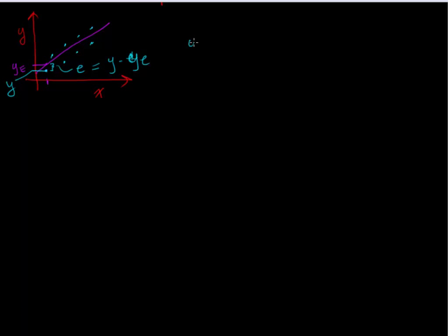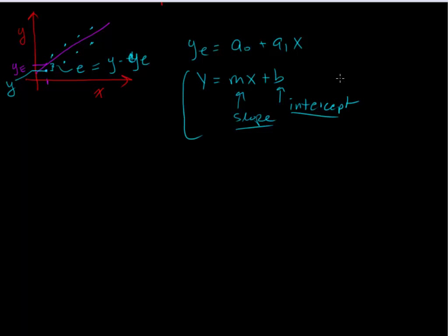And this is the error. And we can express this error as y minus ye. And if our ye is our estimate, it's a straight line in the form of a naught plus a one x. Or, you know, this is the same thing as y is equal to mx plus b. Where this is your intercept. This is your slope.